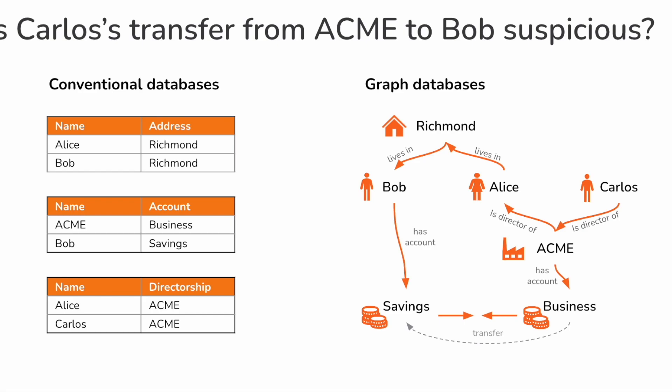The same is not true of a conventional database. Have a look at the tables on the left. You have a table for names and addresses, a table for accounts, and a table for directorships. It's actually exactly the same information, but you have to look pretty hard at it to work that out. Finding the related party transaction is even harder, because for every link on the graph on the right, you have to code a table join on the left. In order to find out that Carlos and Alice are related, you need to join the directorship table to itself on the field directorship.